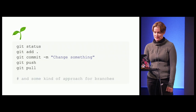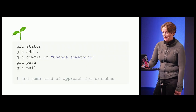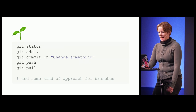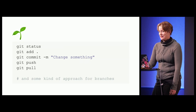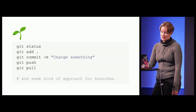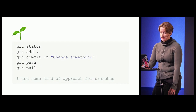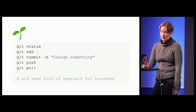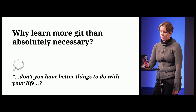With that said, we're going to whip out some commands. Git status, add dot for everything, commit dash M, push, pull, and some kind of approach for working with branches. For a really long time, this was my entire toolbox and I got a long way with that. So why learn more Git than absolutely necessary?